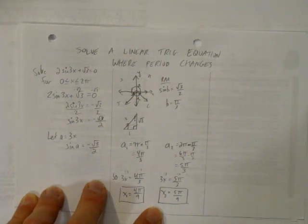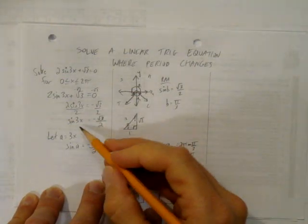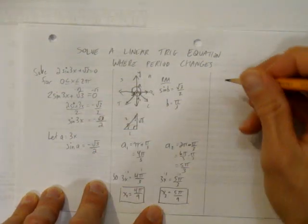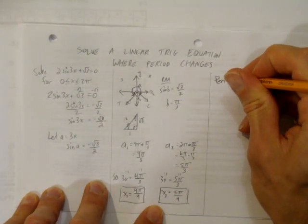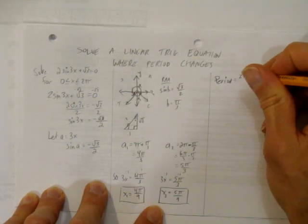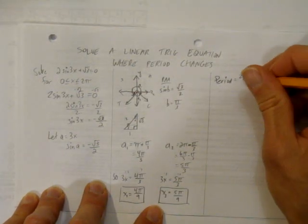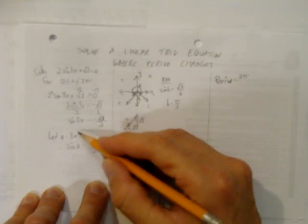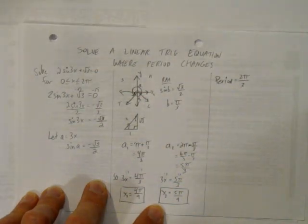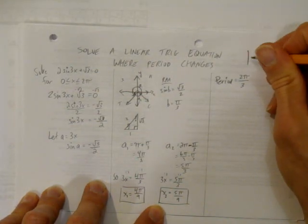There's one more thing to take into consideration, and that is, with a number in front of the x here, inside the sine, that's going to change the period. We know that the period is just 2 pi, that's a typical sine wave, divided by whatever the k value is. In this case, the k value is 3, so our new period is 2 pi over 3.